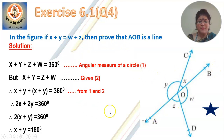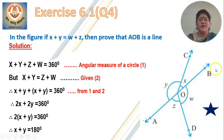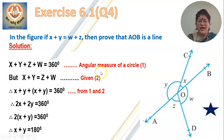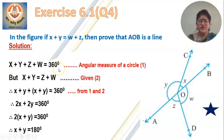Students, in the beginning of the proof, you cannot use angles in a linear pair because it is not given that AOB is a line. Make that very clear. Do not use angles in a linear pair anywhere here because it is not mentioned that AOB is a line — you have to prove AOB is a line. So how do you begin this? Use the angular measure of a circle and number it as statement 1, because x plus y plus z plus w gives you a complete circle and the measure is 360 degrees.